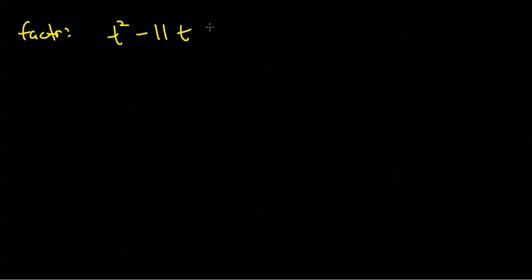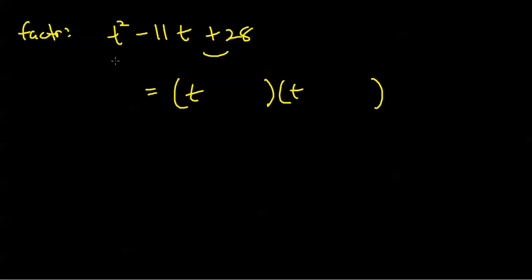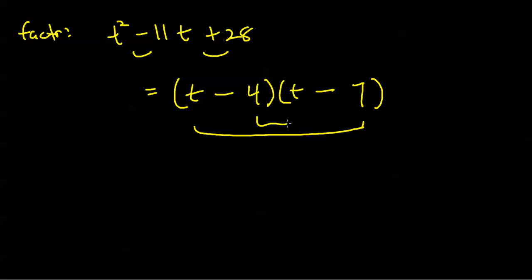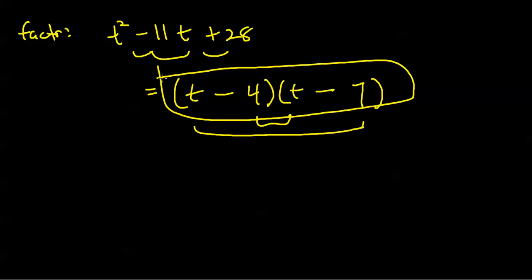Let's try another one: factor t squared minus 11t plus 28. The lead coefficient here is 1, which makes my choice of first terms easy — t times t. If this sign is positive and this sign is negative, the signs both have to be negative. Factors of 28 in the last slots — I think 7 and 4 will work nicely. The outer product would be minus 7t, the inner product minus 4t, and indeed the inner and outer sum adds up to the middle term. So my final answer is t minus 4 times t minus 7.